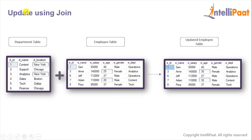Here we have two tables: the department table and the employee table. I want to update the age value in the employee table wherever the department location is New York. From the department table we can find out that the Content and Analytics departments are based in New York.